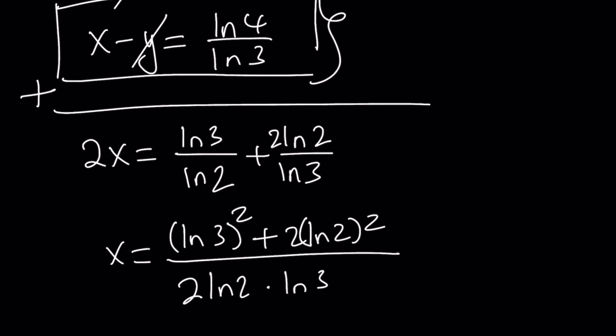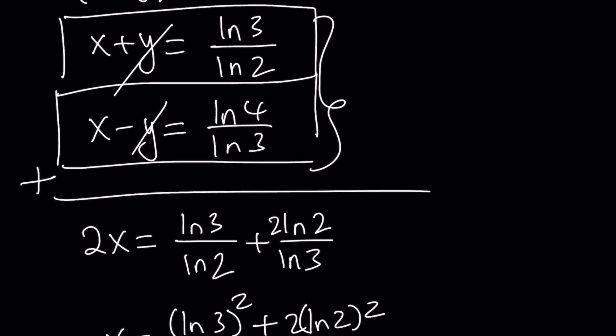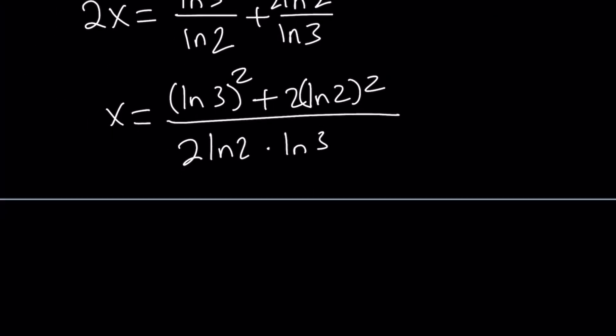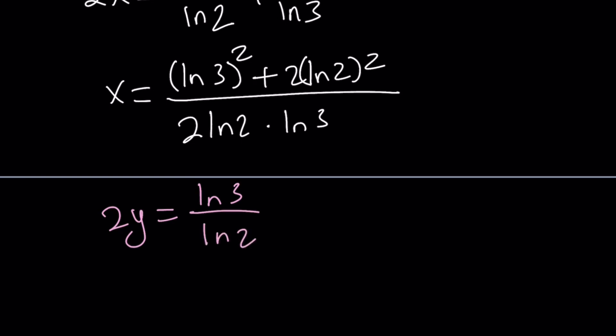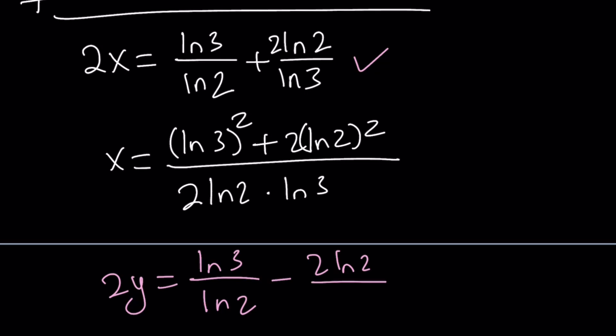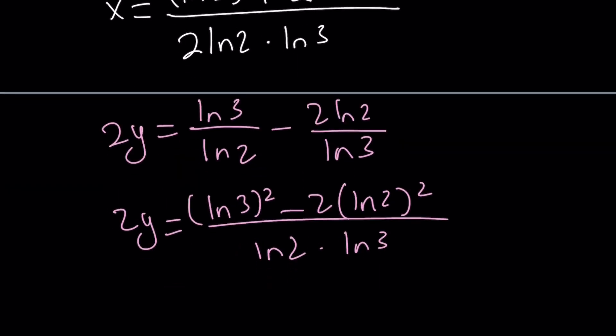And similarly, we can find the value of y, but I don't think you want to substitute this value into any of these equations. That's going to be cumbersome. Instead, let's subtract these equations. Because if you subtract, then you're going to get the value of 2y. 2y is going to give us ln 3 over ln 2 minus ln 4 over ln 3. Pretty much the same thing with a minus sign. And then making a common denominator, we get 2y equals ln 3 squared minus 2 times ln 2 squared divided by ln 2 times ln 3. We can divide both sides by 2. That's the value of y.